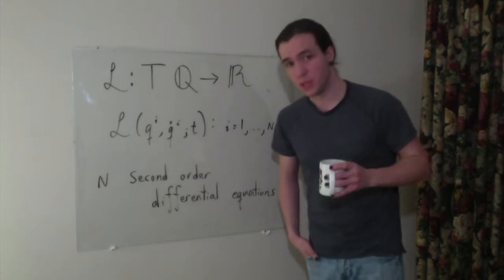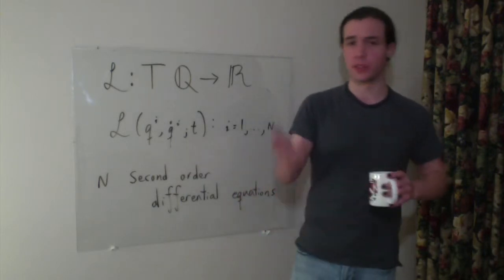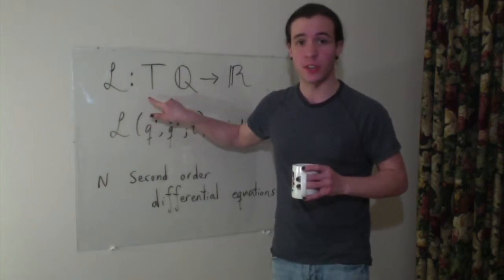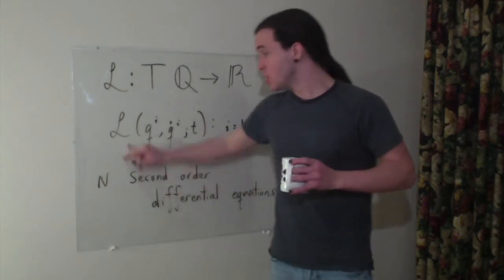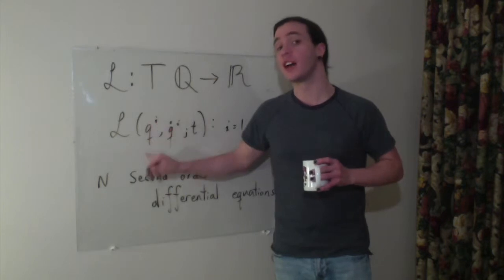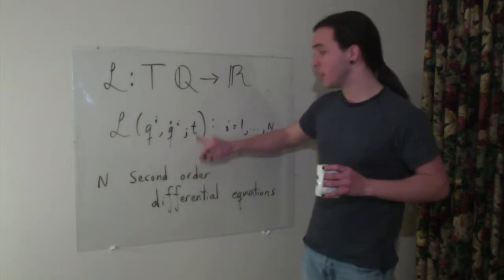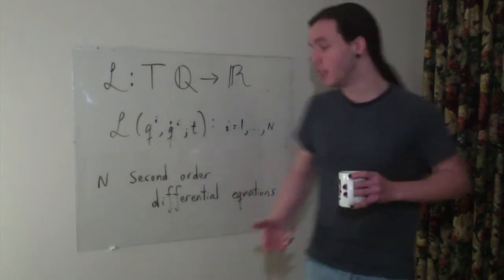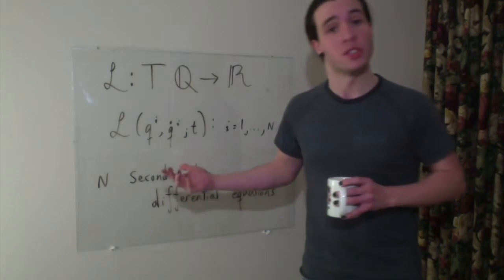So Lagrangians are these functions that map something known as the tangent bundle onto the real line. So that's just something for you to look up if you're interested, but this would be configuration space. This is the tangent to the configuration space, and that's mapped onto the real line. So what this means is that the Lagrangian is a function of the variables of position designated by qi, that's the index i of the position, q dot, the time derivative of that position, and then possibly of time itself. And when you use Lagrangian mechanics, you end up getting n second-order differential equations, where n is the number of coordinates that you use to describe your system.